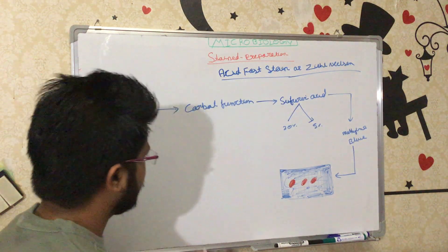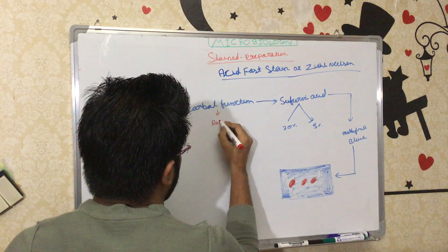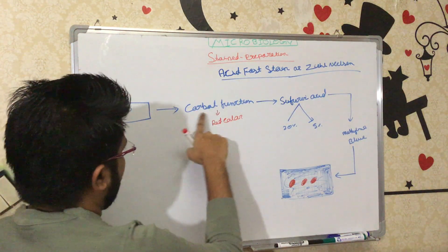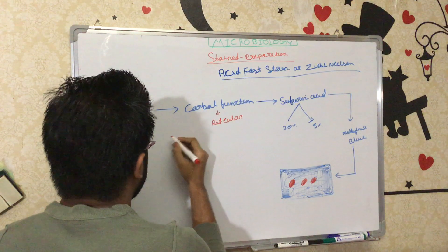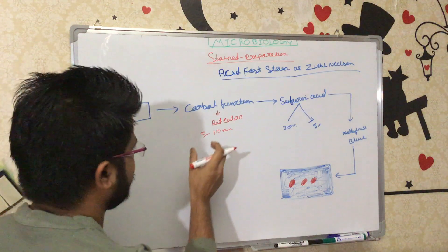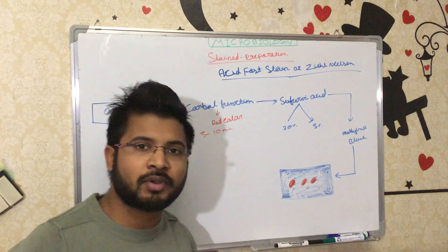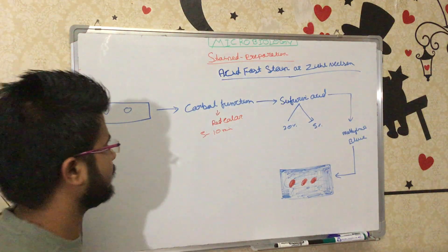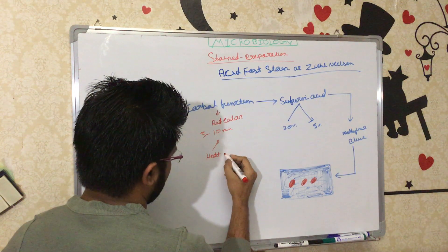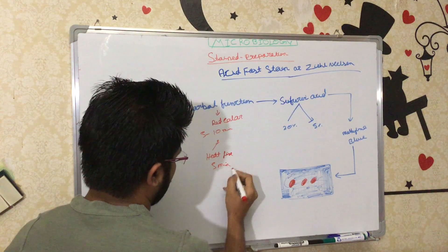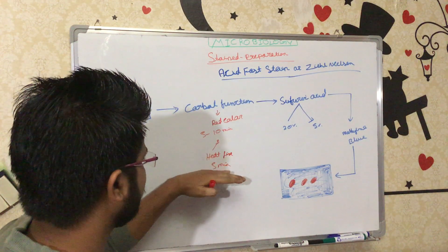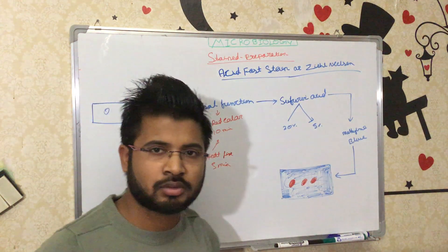After heat fixation, we apply carbol fuchsin — which is a red color dye — on the slide. We apply the carbol fuchsin and wait approximately five to ten minutes. During this time, we also heat-fix the slide for approximately five minutes, allowing the stain to penetrate.